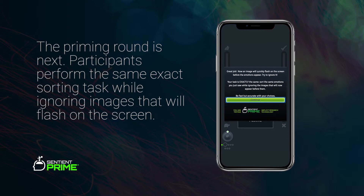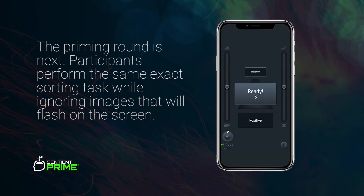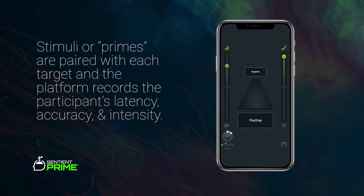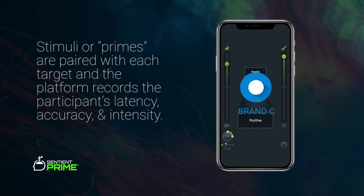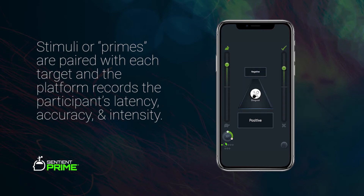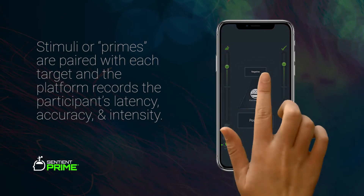After this practice round comes the priming round. Participants are told to perform the same exact sorting task while ignoring words or images that will flash on the screen before each target appears. These flashing words or images, called primes, are presented for 500 milliseconds prior to each target appearing. A prime will be paired with each target multiple times, and the platform records the impact of these primes on the participant's ability to sort the targets quickly and accurately.